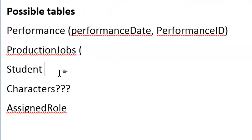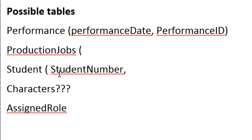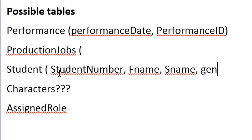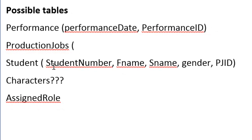So for the students table: it's very likely they're going to have a student number, which is going to be the primary key. It's going to have their name - so maybe first name and surname, though it doesn't really specify if it needs both of those, you'll find out on the day. Gender, obviously. And also their preferred job role. This is something that is unsure - it might be that this is a foreign key link to the production jobs table, specifically a production jobs ID. Or it could be just free text which says actor or sound crew, something like that.